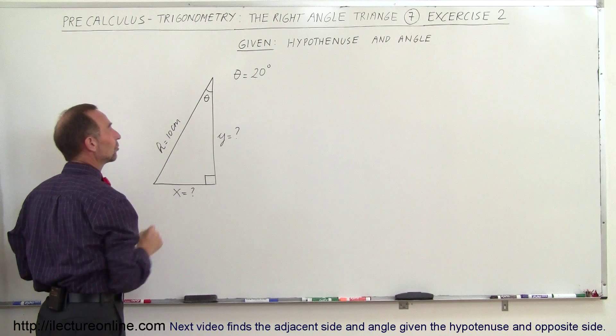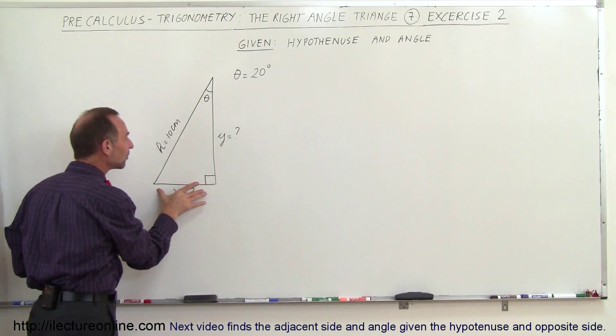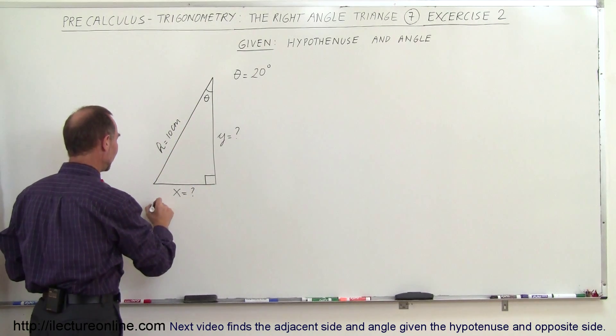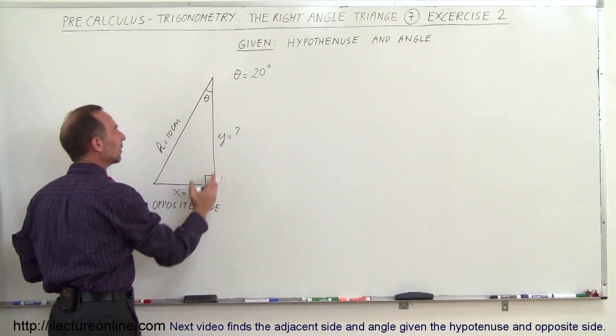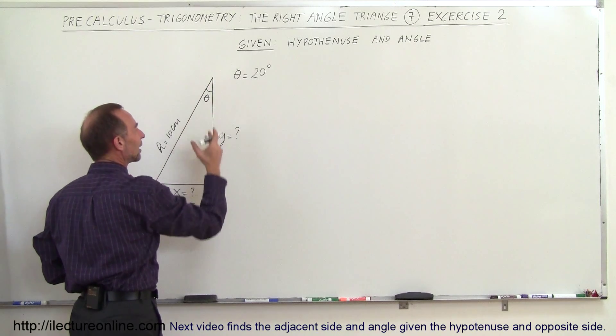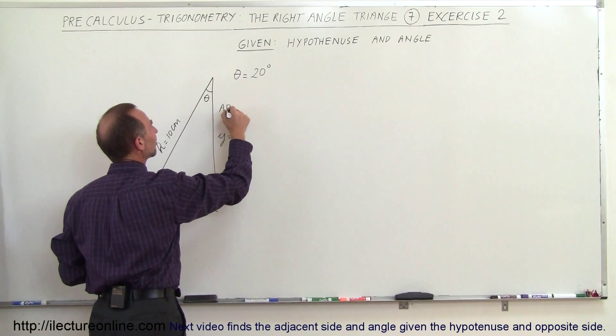If this is the angle of concern right there then this is the opposite side to the angle so let's list this as the opposite side. And this side right here is adjacent to the angle, it touches the angle right here so this can be called the adjacent side.